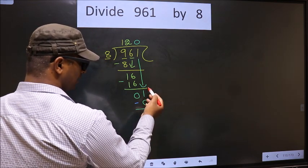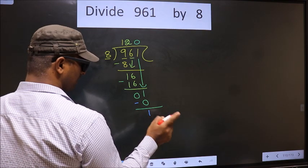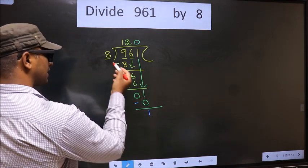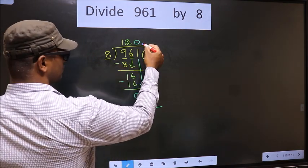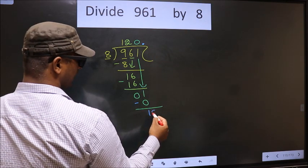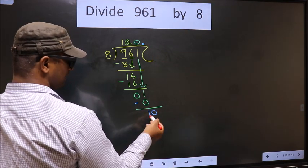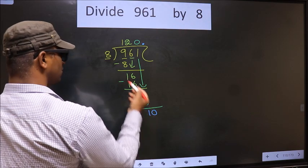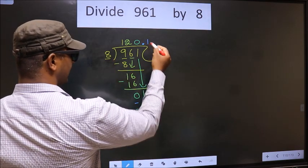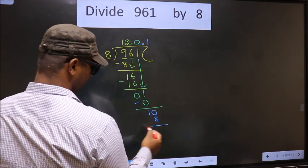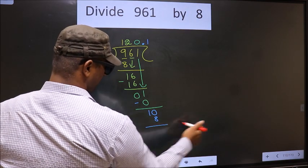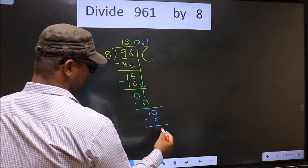Over here, we did not bring any number down. And 1 is smaller than 8. So now you can put a dot and take 0 here. So 10. A number close to 10 in 8 table is 8 once 8. Now you subtract. 10 minus 8, 2.